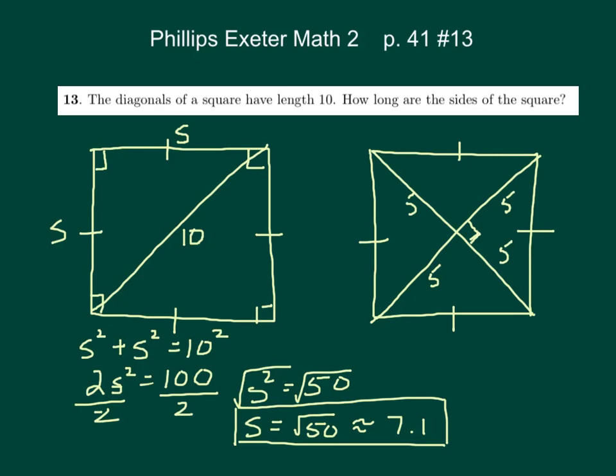So now we could do the same idea, but use this triangle inside, and do 5² + 5² = S². So we could do another Pythagorean theorem there.